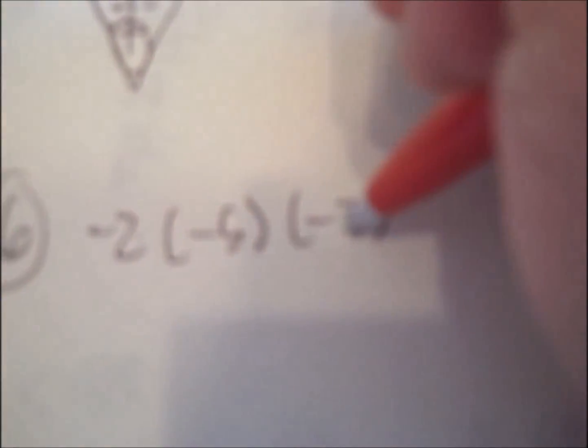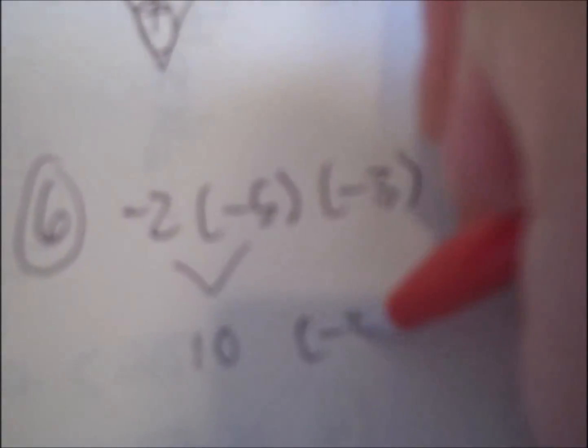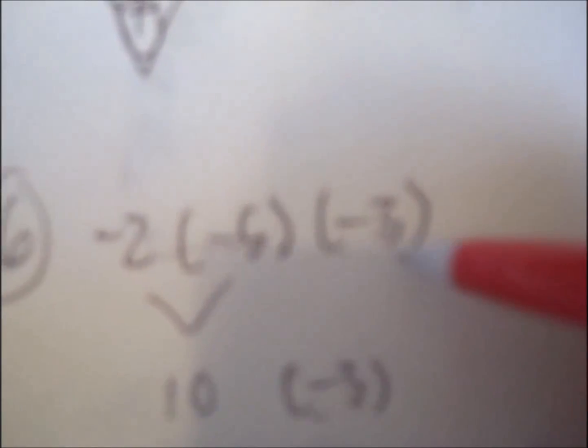Now there are three numbers to multiply. Step by step, one at a time. Negative 2 times negative 5 is 10. Then I bring down this negative 3. 10 times negative 3 is negative 30. Left to right, one step at a time.